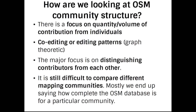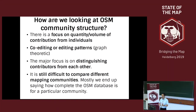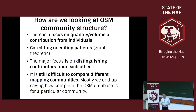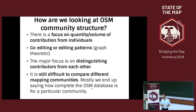To summarize the literature briefly: there's a focus on quantity and volume of contributions, co-editing, distinguishing contributors from each other, and showing how different contributors are. It's still difficult to compare one mapping community to another — we still haven't really decided how we're going to do that. Most papers end up saying how complete a particular city is and drawing some inferences that that's a reflection of the community.